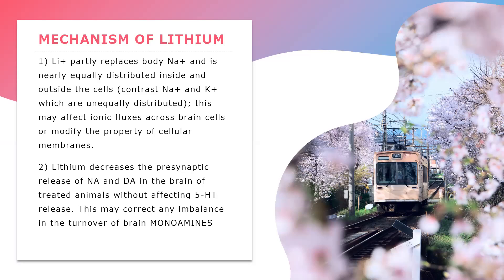The second mechanism: lithium decreases the presynaptic release of noradrenaline and dopamine in the brain without affecting 5-HT. This means lithium is actually correcting the imbalance of monoamines in the brain.